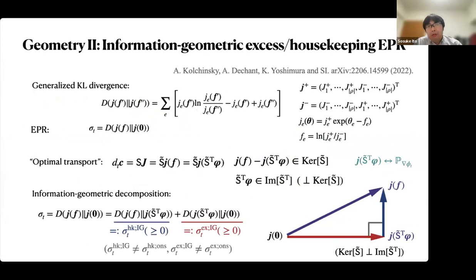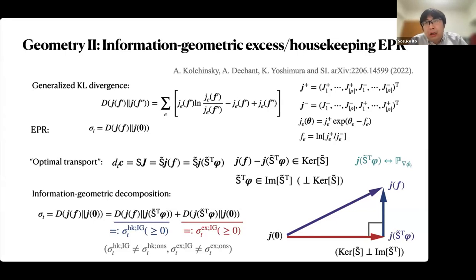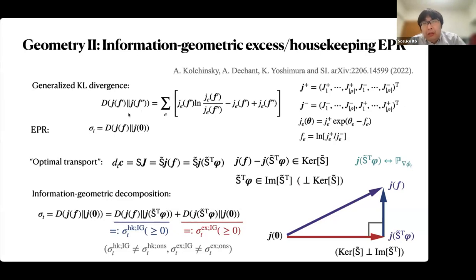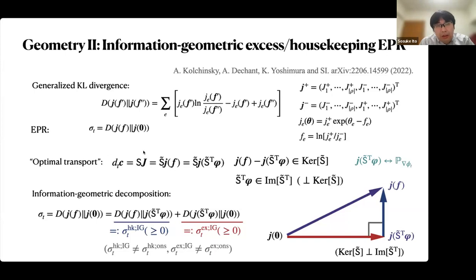Finally, I would like to explain another decomposition: the information geometric decomposition. For the chemical rate equation, we cannot define path probability distributions directly. Instead, we consider the unidirectional flow and a generalized Kullback-Leibler divergence. We can prove that the entropy production rate is given by the generalized Kullback-Leibler divergence for the one-way flux. We then consider the optimal transport problem for this Kullback-Leibler divergence, and define the stoichiometric matrix for the unidirectional flow.